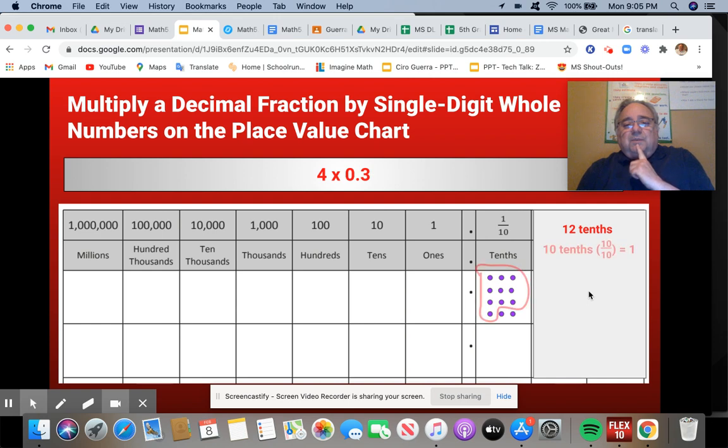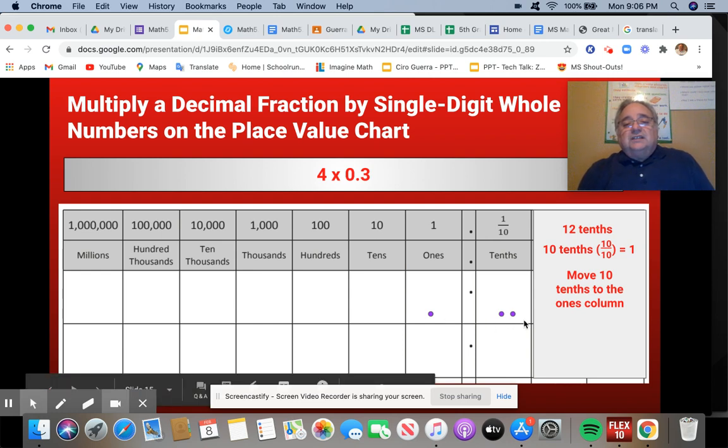So if I circle that, I can move it over into the ones place. So move ten tenths to the ones column. And that leaves me with one and two tenths. So multiplying three tenths times four equals one and two tenths. Excellent job, guys. You did very well.